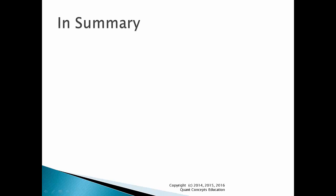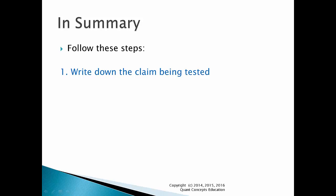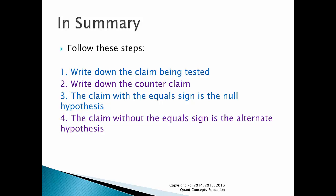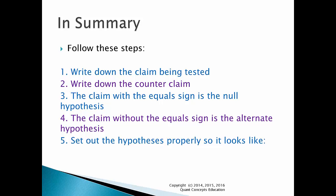In summary, you simply have to follow these steps. One: write down the claim being tested — this will usually be quite obvious in the question. Two: write down the counterclaim — this is the complete opposite claim; what must be true if the claim in step 1 is false? Three: the claim with the equal sign is the null hypothesis — this is always the case. Four: the claim without the equal sign is the alternate hypothesis. Five: set out the hypotheses properly.